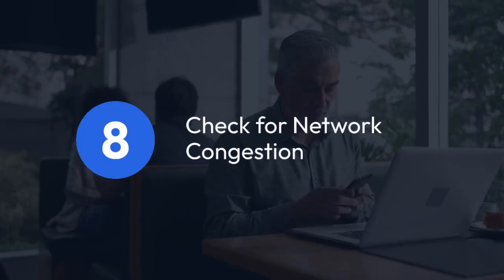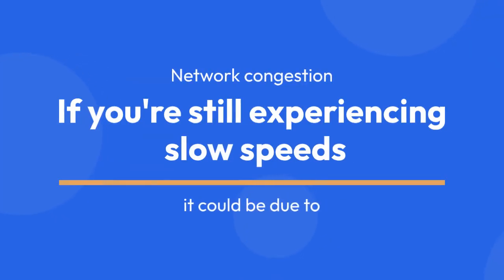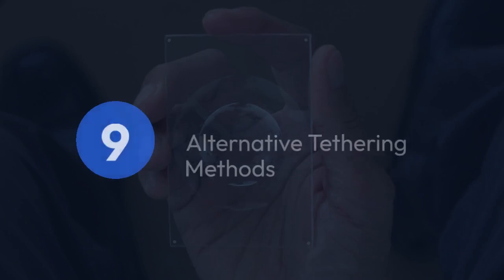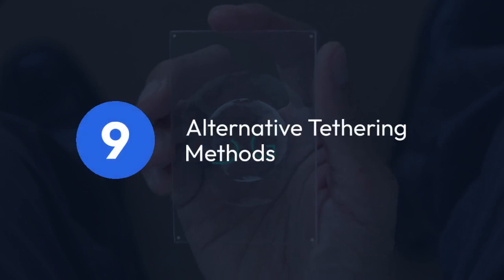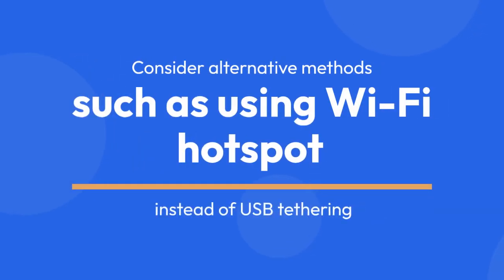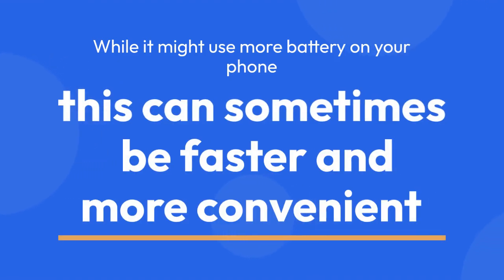8. Check for network congestion. If you're still experiencing slow speeds, it could be due to network congestion in your area. Try connecting at different times of the day to see if speeds improve. 9. Alternative tethering methods. Consider alternative methods, such as using a Wi-Fi hotspot instead of USB tethering. While it might use more battery on your phone, this can sometimes be faster and more convenient.